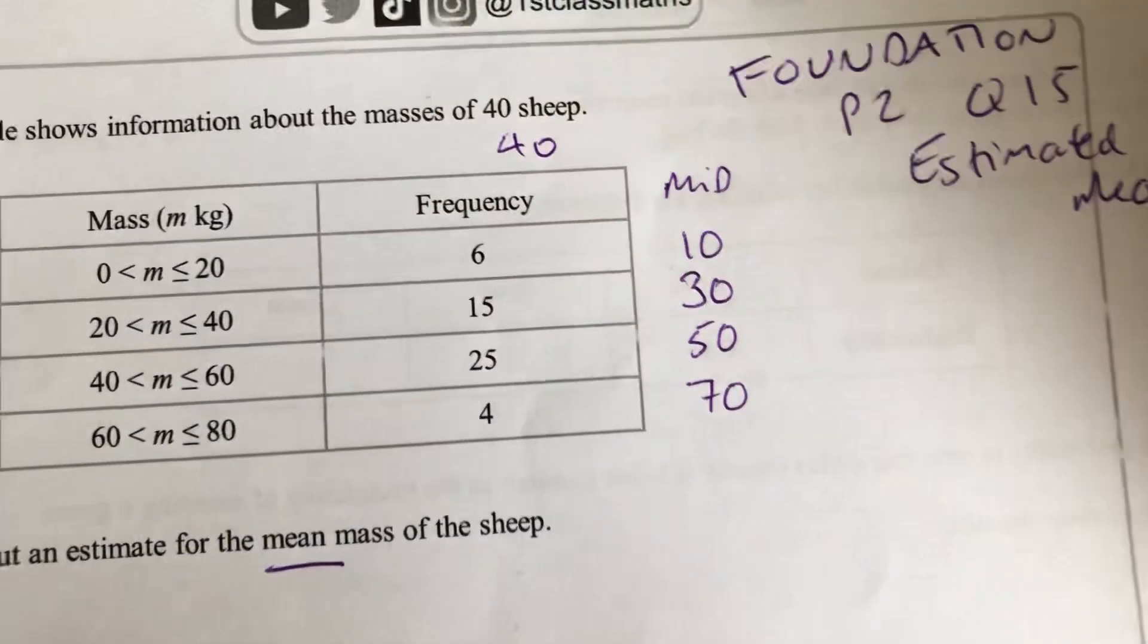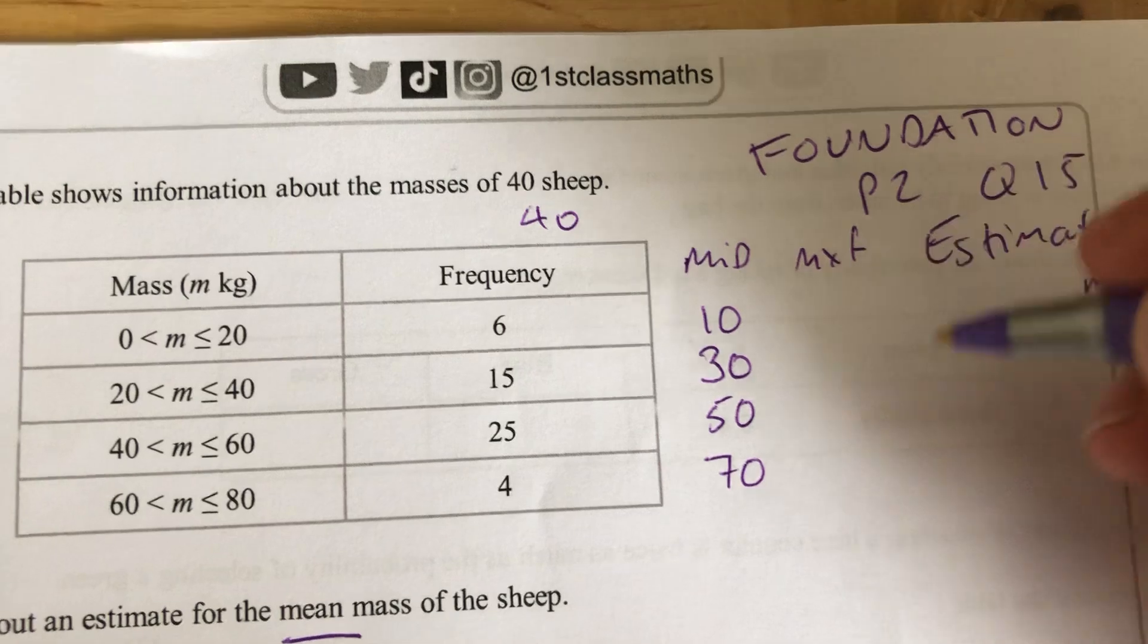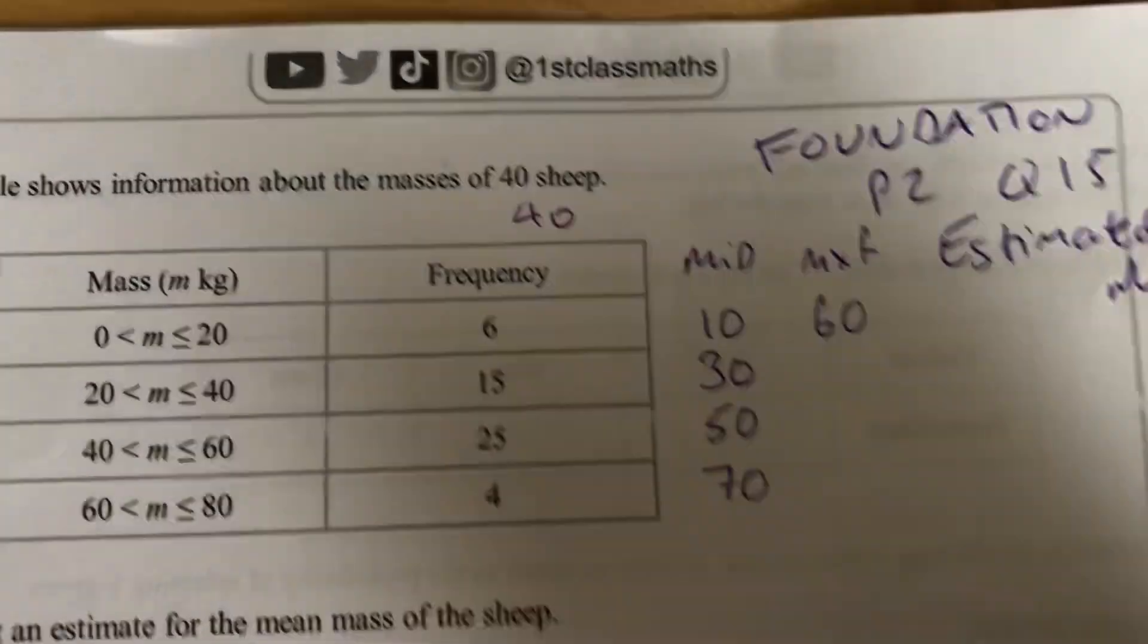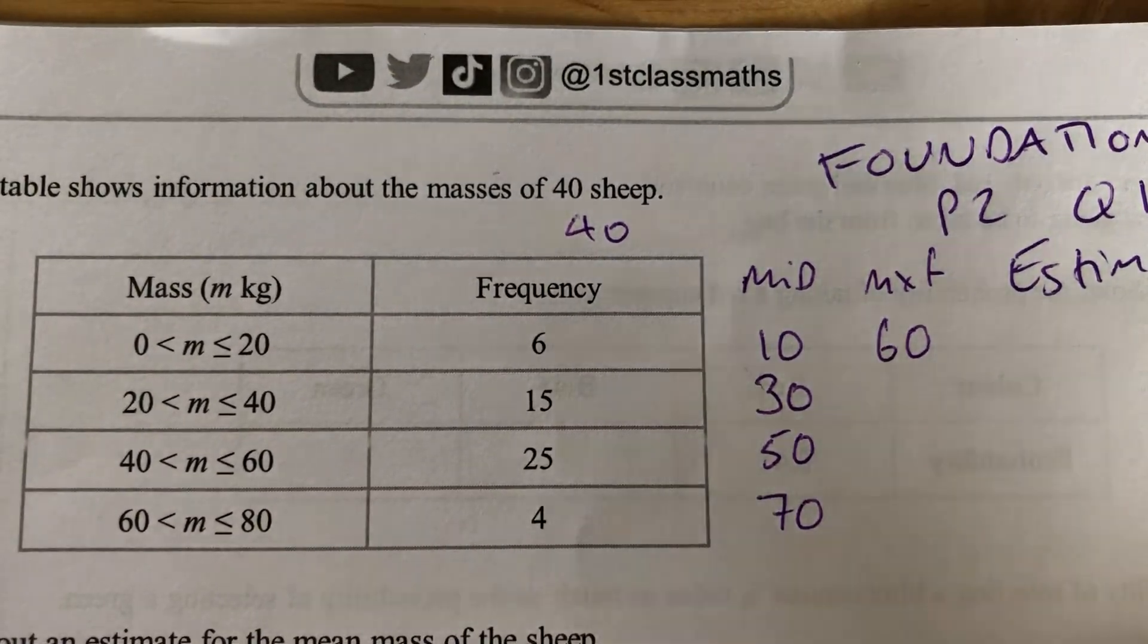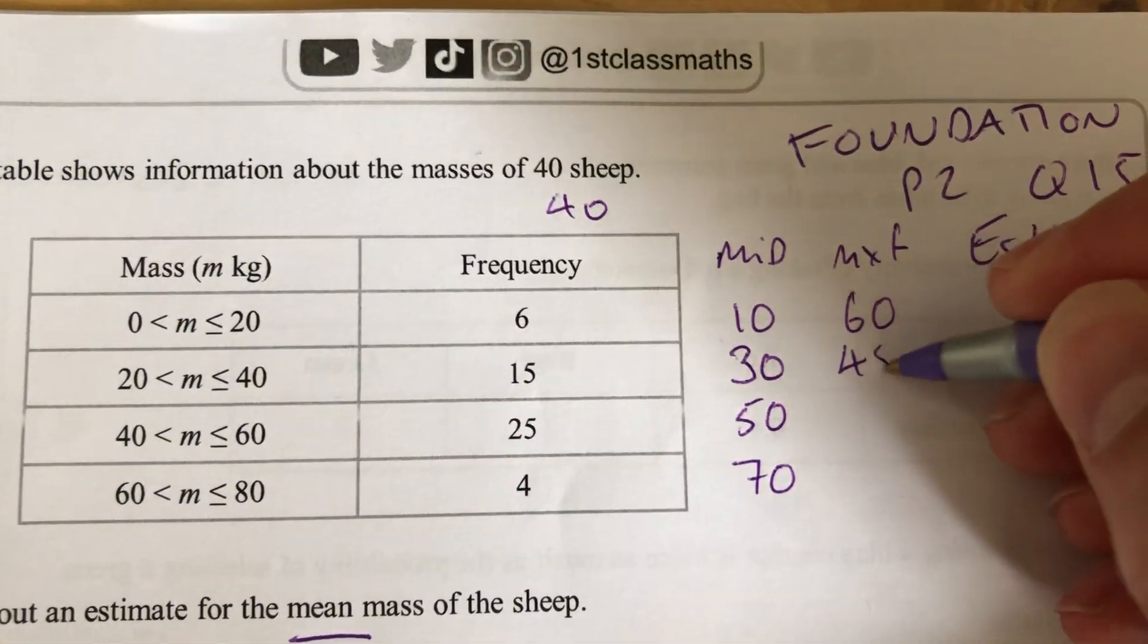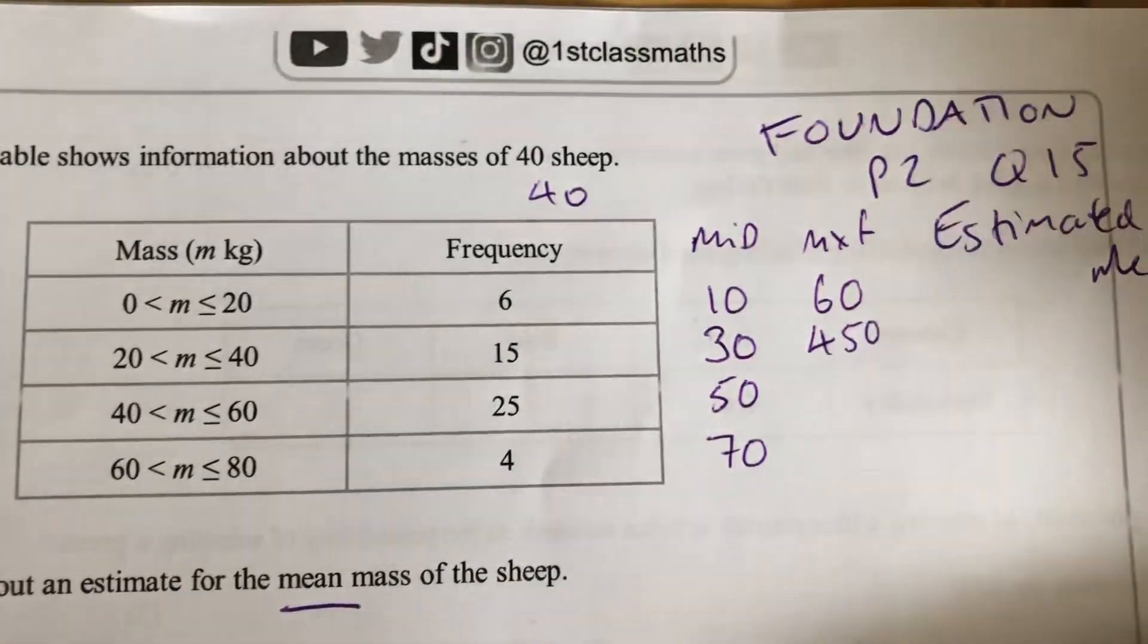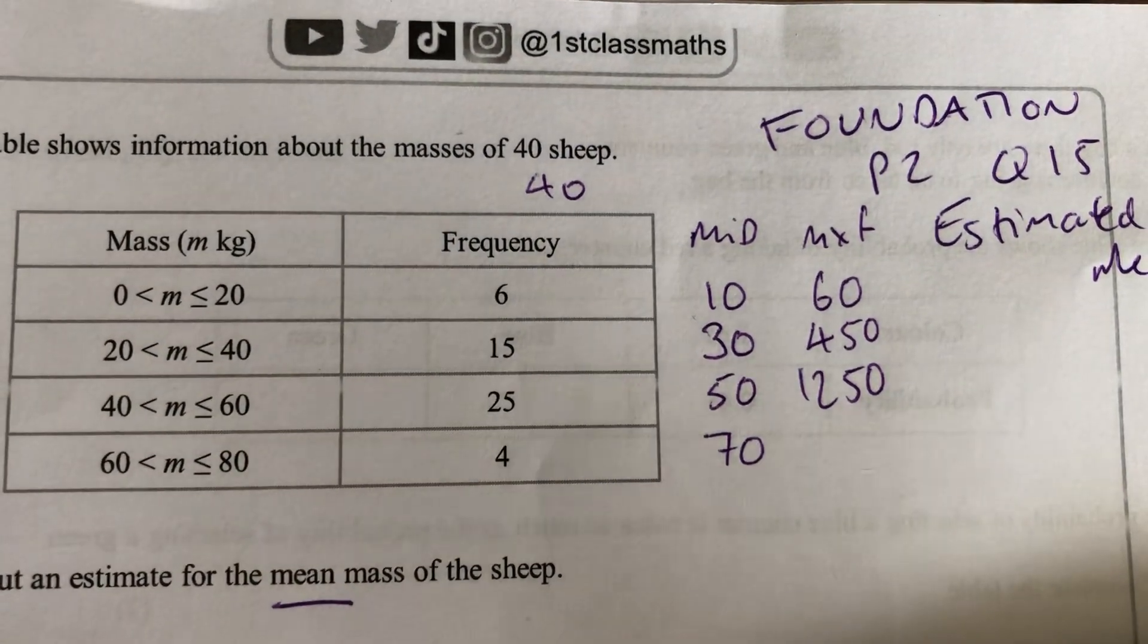Then we need to do the midpoint times the frequency to get the mass for all 6 of those. That'll be 60. It is a calculated paper, so I can do 15 times 30 on the calculator. It's 450. 25 times 50 is 1,250. And 4 times 70 should be 280.